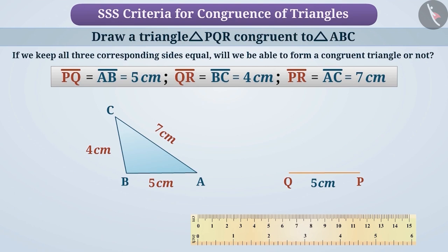You got it right. For this purpose, we will use a compass. To find the position of point R, we will take the distance of 4 cm with the compass and draw an arc by placing the pointed end on Q. Each point of this arc represents a distance of 4 cm from Q.